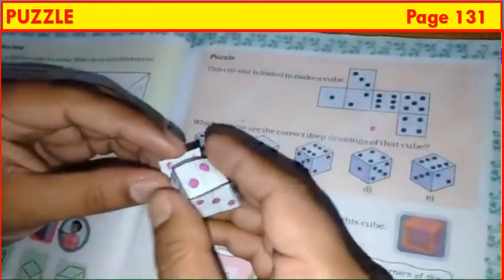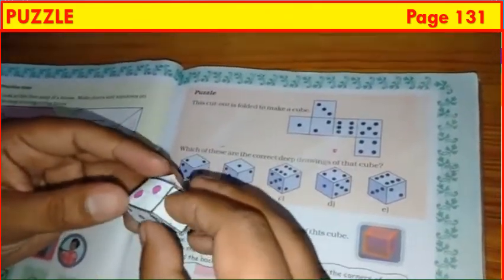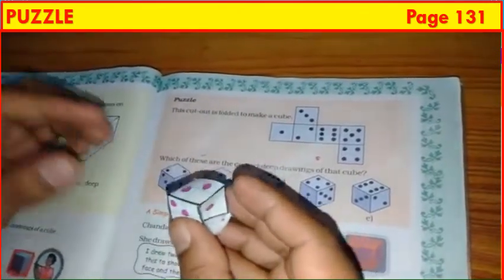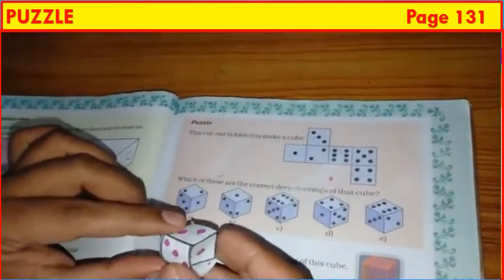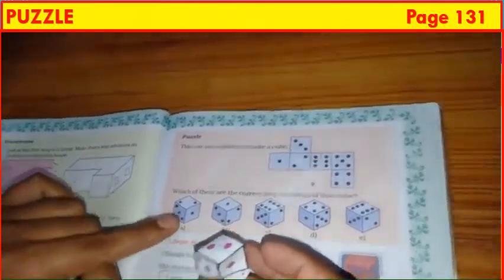Now, see figure A. See on the top, 2 is there. On the left side, 3 is there. On the right side, 1 is there. Here, I got it. So, put a tick mark.